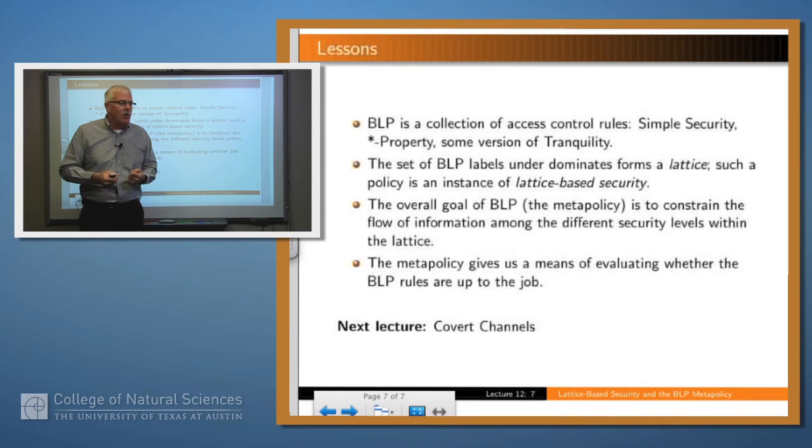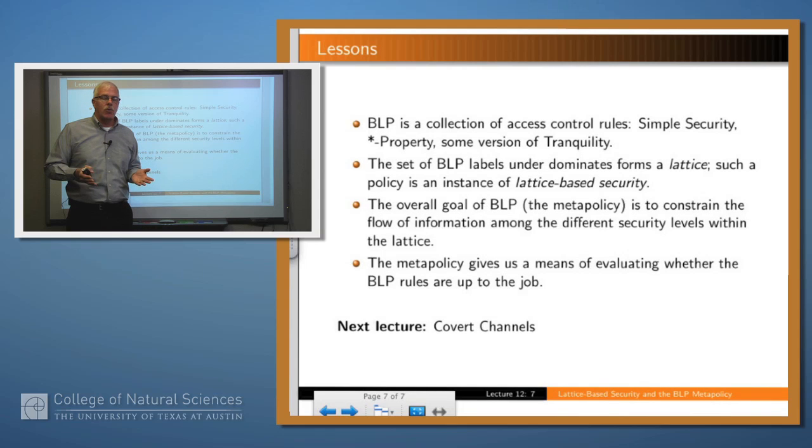So what have we learned? Well, Bell and LaPadula is a collection of access control rules, in particular simple security, the star property, and some version of the tranquility property. The set of Bell and LaPadula labels under the dominance relation form a particular algebraic structure which is called a lattice. And so this style of modeling security is sometimes called lattice-based security for that reason. The overall goal then of Bell and LaPadula is to constrain the flow of information within that lattice of labels. In particular, information should only flow upward in the lattice of labels.